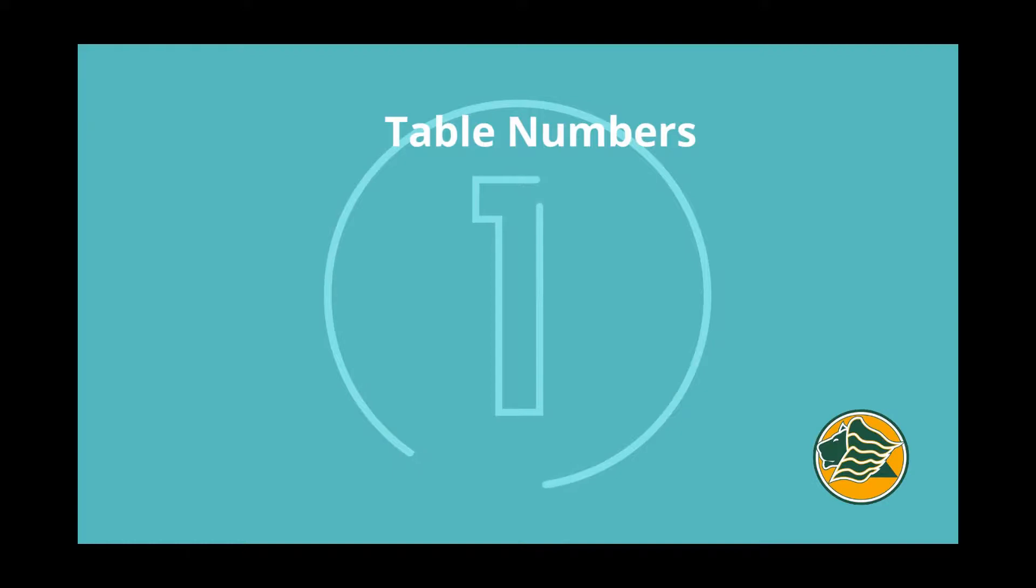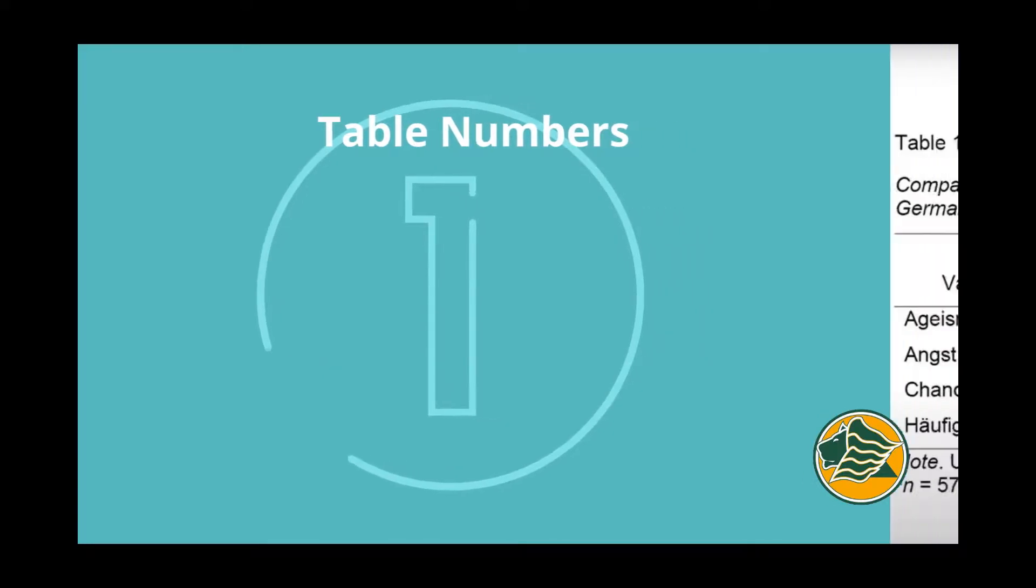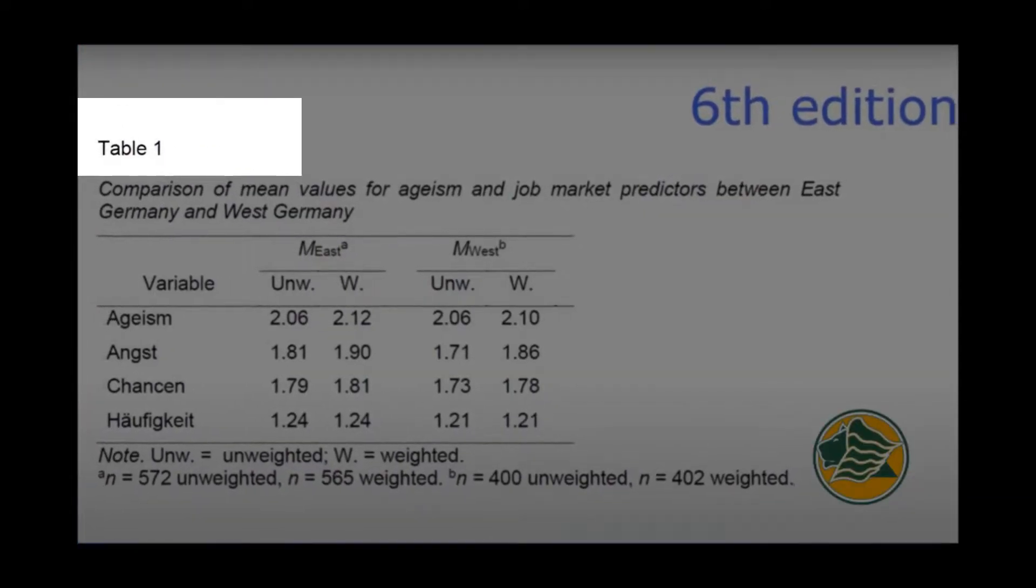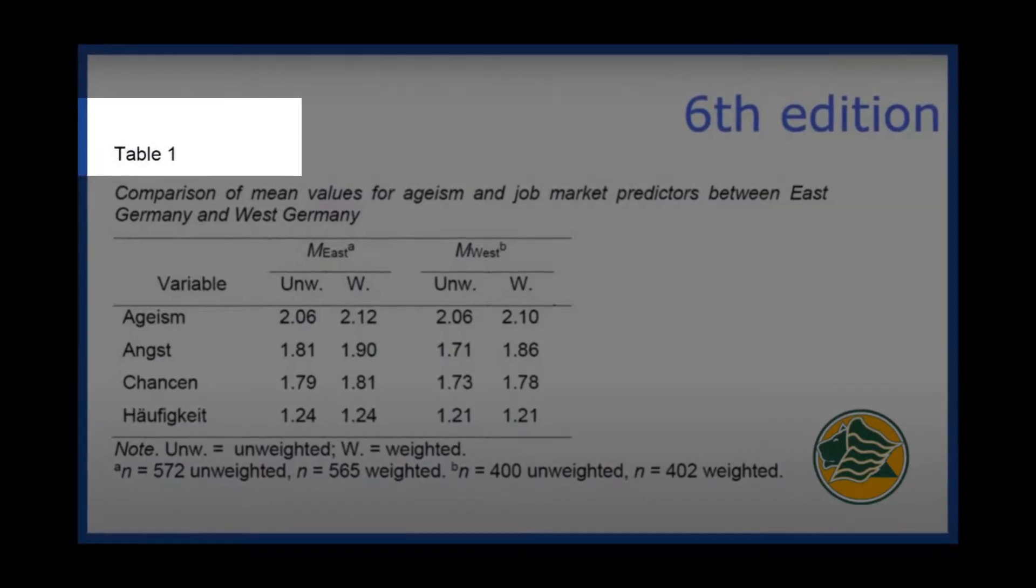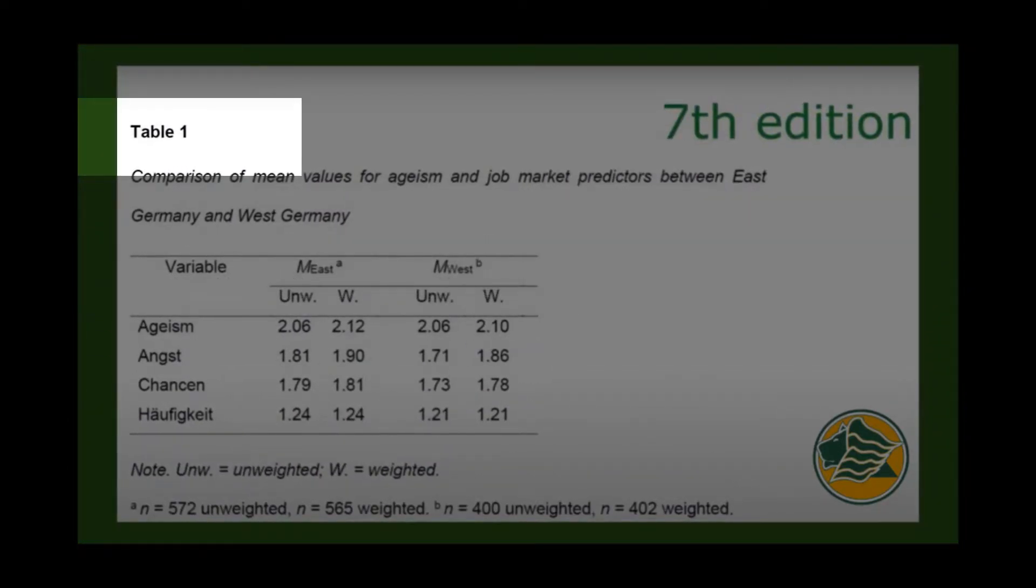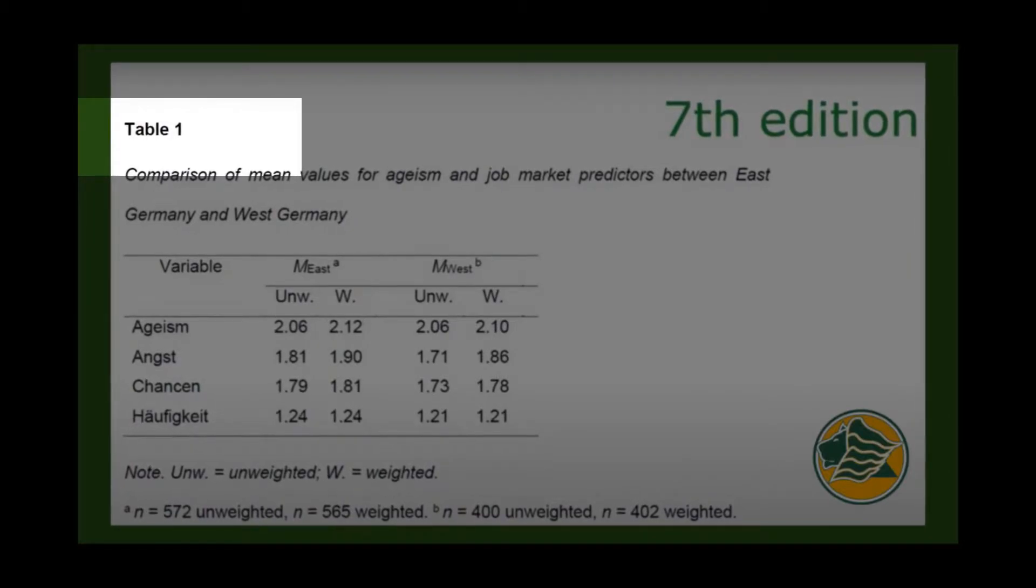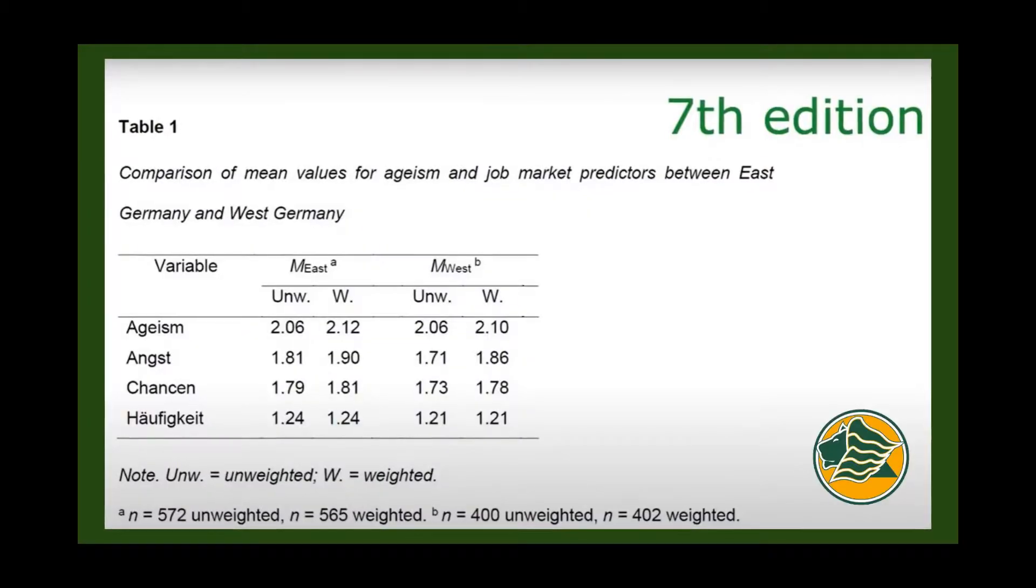The first change is to the table number. In APA 6, the table number was in the same font and size as the rest of the paper. In the 7th edition, you will change the word table and the number to bold font.